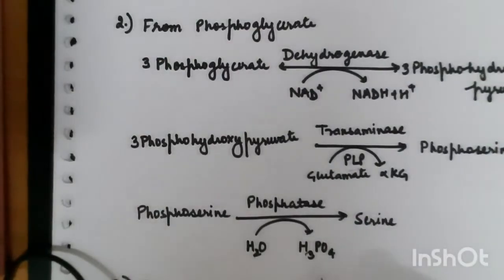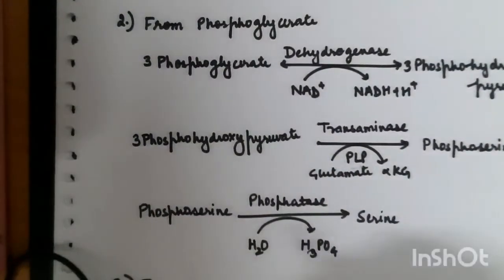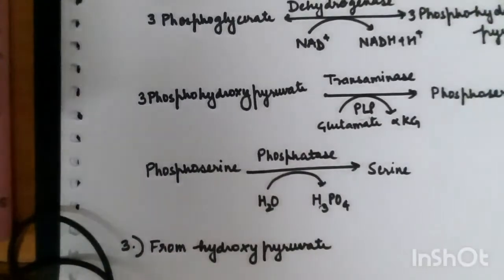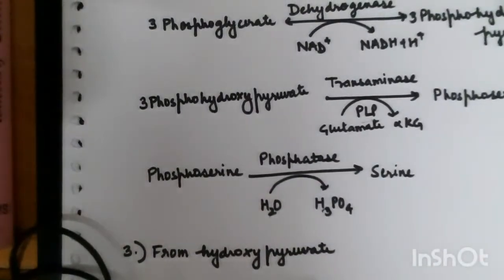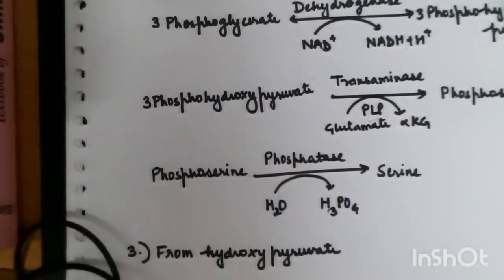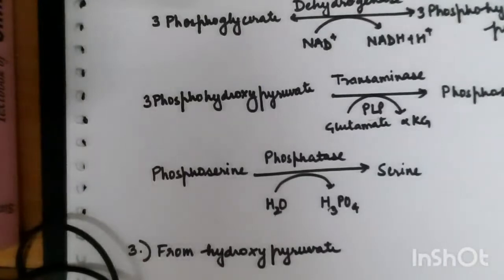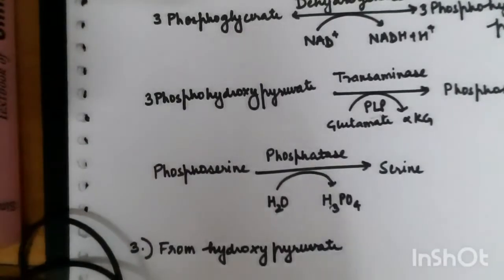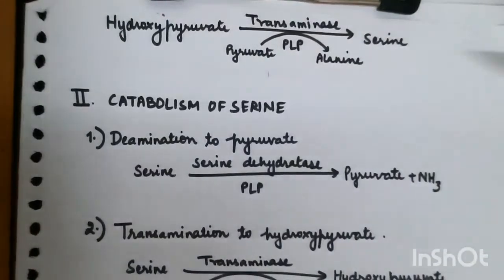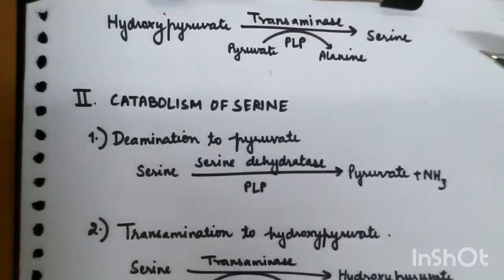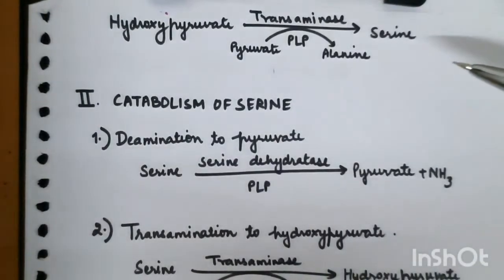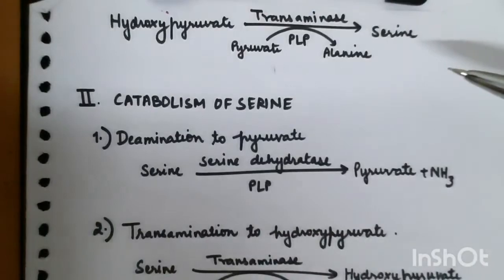Another pathway for serine synthesis is from hydroxypyruvate. Hydroxypyruvate is converted into serine in the presence of enzyme transaminase and coenzyme PLP. Here, pyruvate is also converted into alanine.